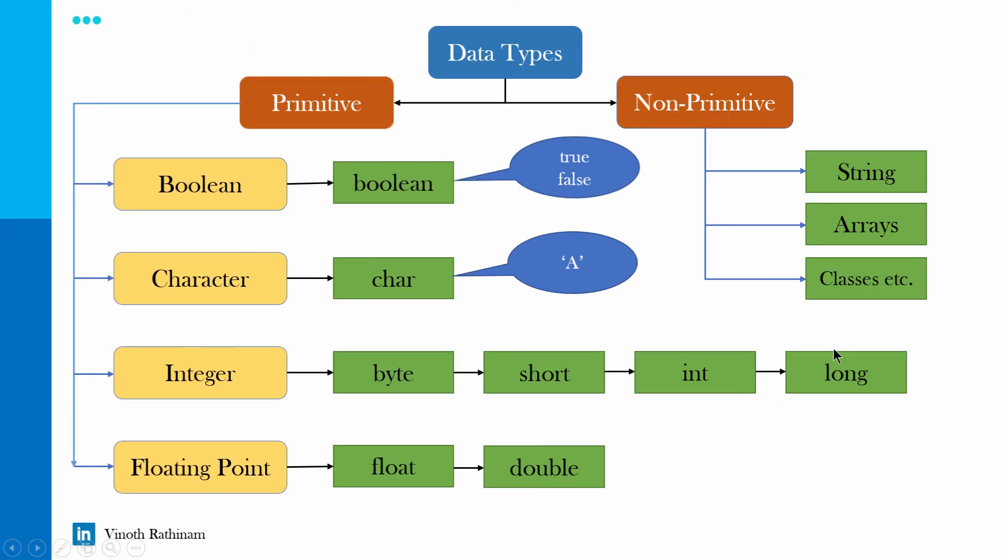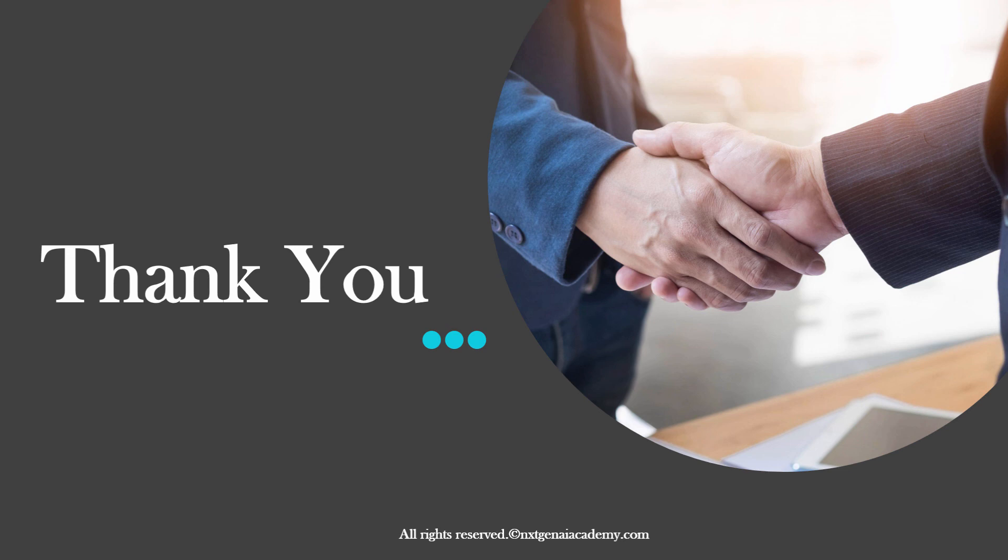Hope you got a clear picture about the data type. So the final summary, the data type divided into two types, primitive and non-primitive. And non-primitive string we have seen. Primitive we have four classification: Boolean, character, integer and floating point. Based on the user input, we have to choose the respective data type. That's the end of this topic.